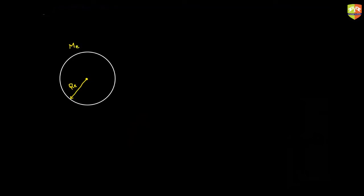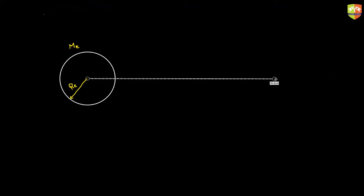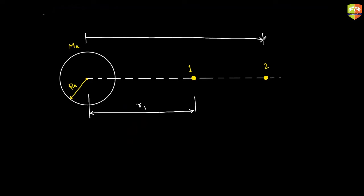Let's say this is Earth. The Earth has radius of Earth and mass of Earth me. Now let's say this is the path along which I am moving an object. Suppose I am going from point number one to point number two. This distance from the center is r1, and this distance is r2.